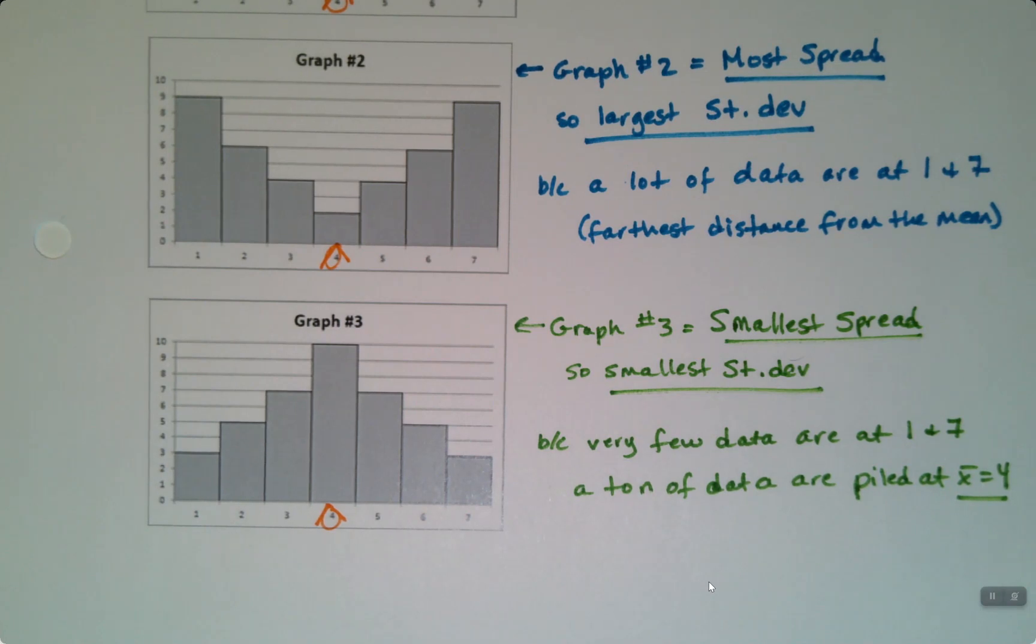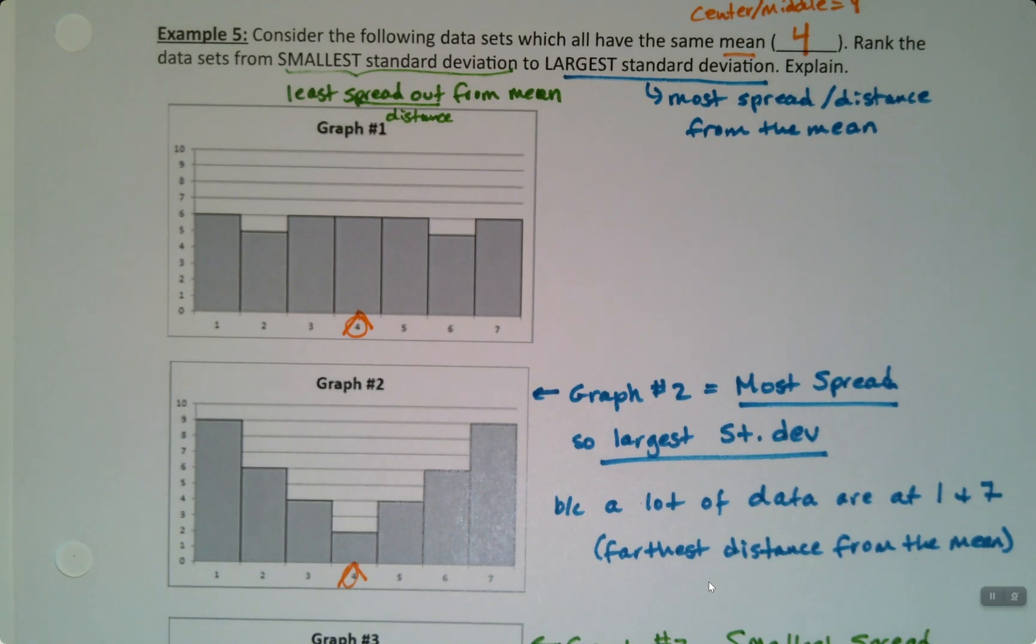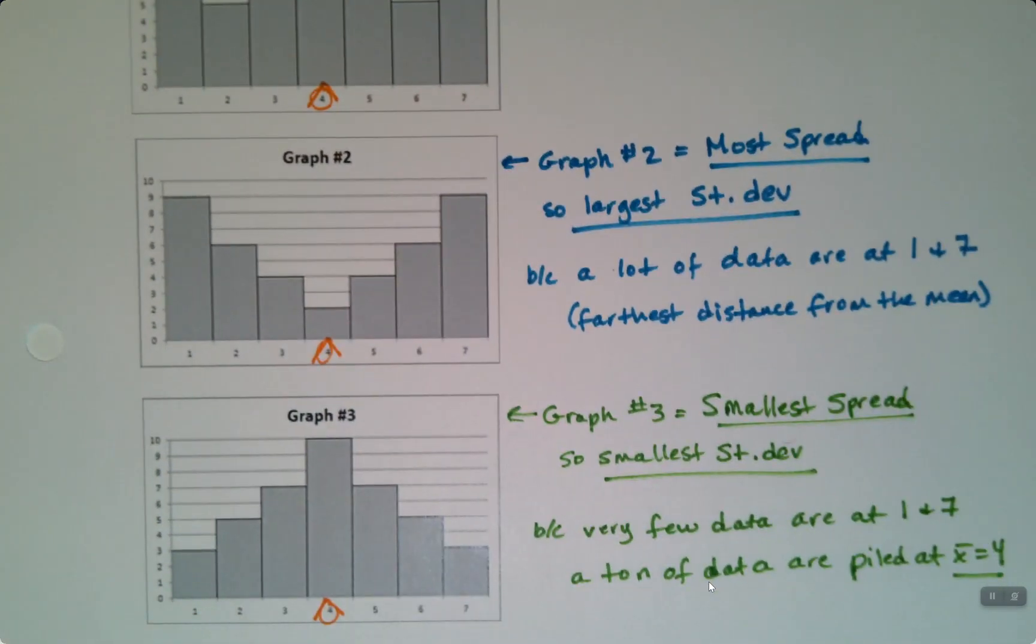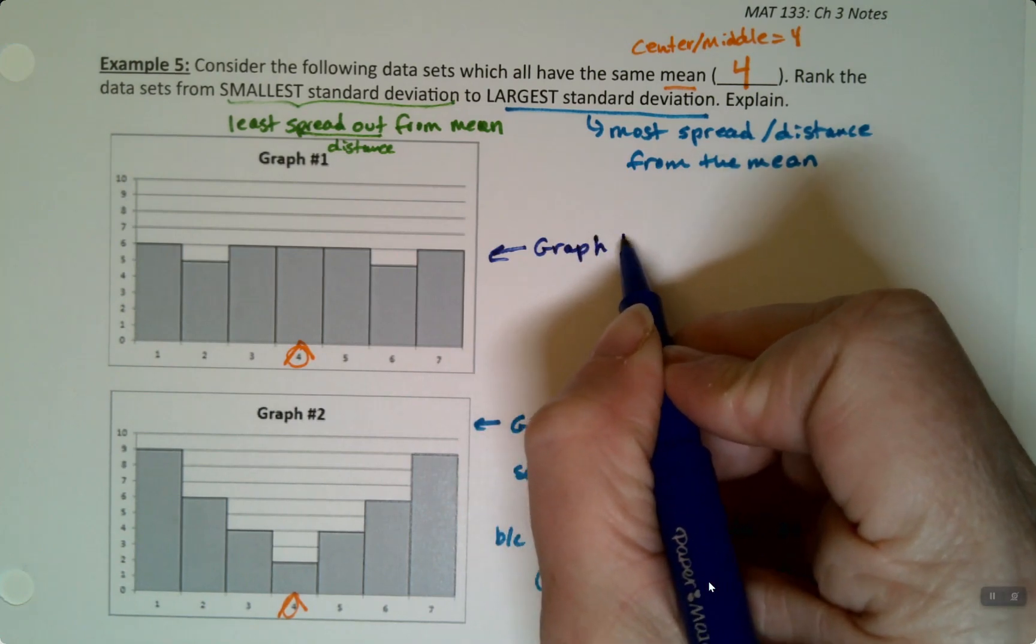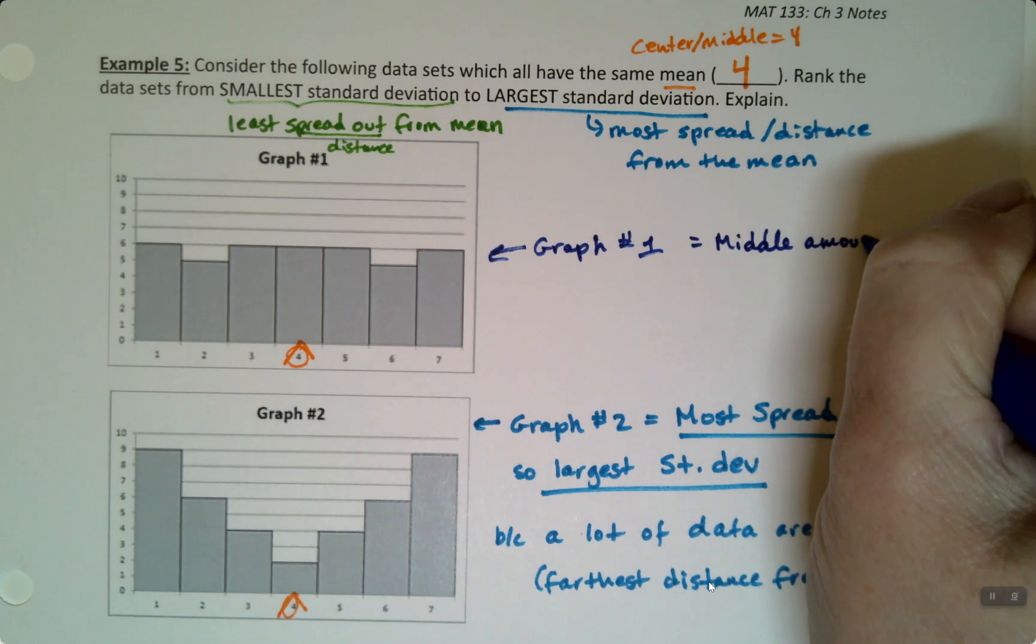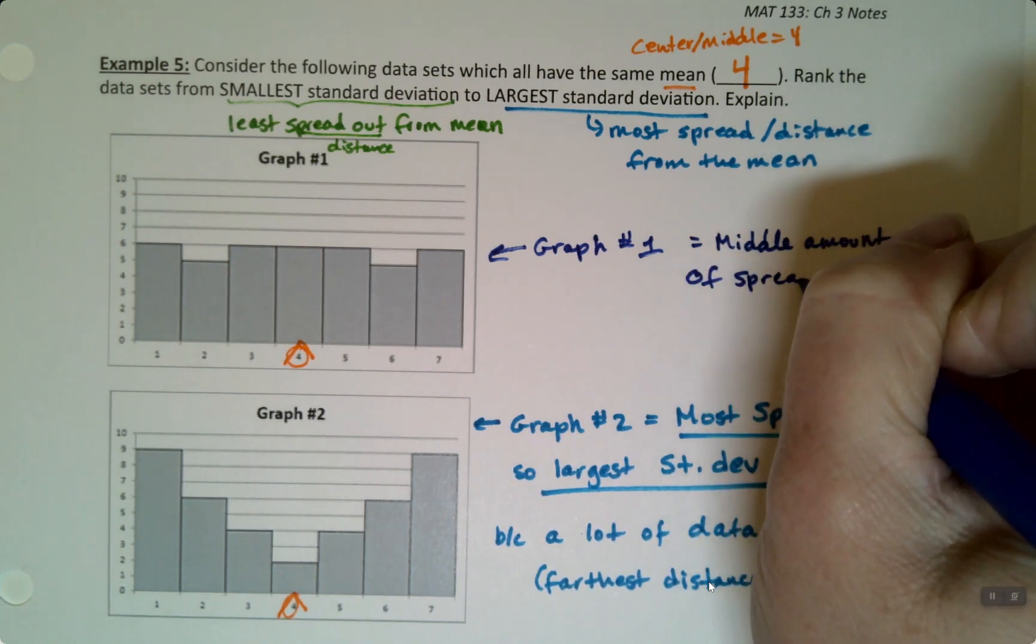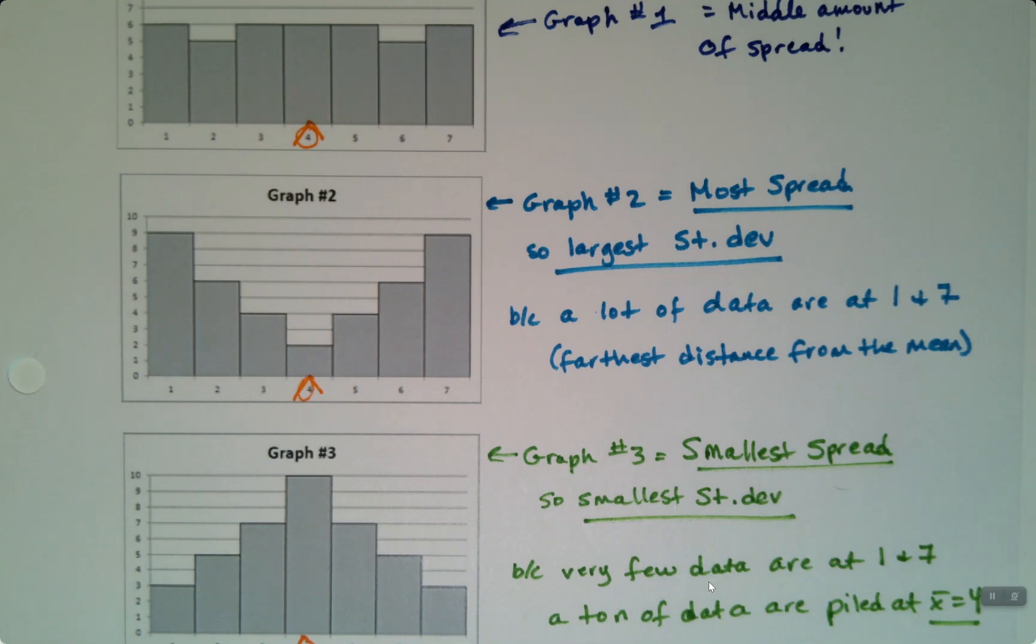Okay, well, that must mean by process elimination that the one on the top is the middle one. And it is. Graph number one is the middle graph. Because it has some at one and seven, but not as much as number two. But it has more than graph three does. So, it didn't ask for it, but I'll just kind of throw this in there. This graph, graph number one is the Goldilocks graph. It's right in the middle. So, it equals the middle amount of spread. That's tying a little bit into section 3.3. But, hopefully you can see that relationship there. That there's something going on with when values are far away from the center versus close to the center. Because, of course, that's what standard deviation measures. Standard deviation measures spread. It measures distance from the center.